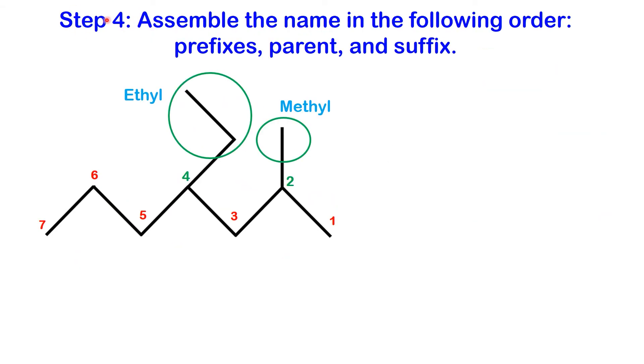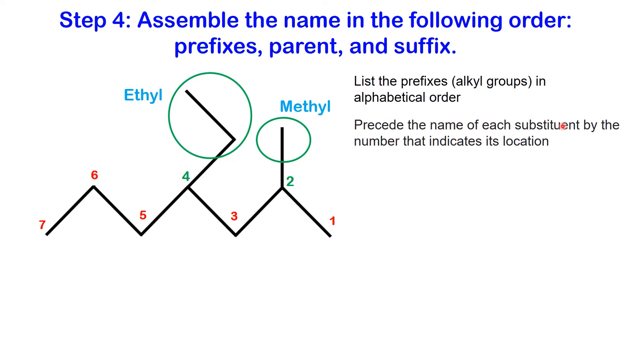Step four: assemble the name in the following order: prefixes, parent, and suffix. Let's continue with the molecule from the previous example. List the prefixes (alkyl groups) in alphabetical order, preceding each with the number indicating its location. Separate numbers from letters with hyphens. The name for this molecule is 4-ethyl-2-methyl heptane.